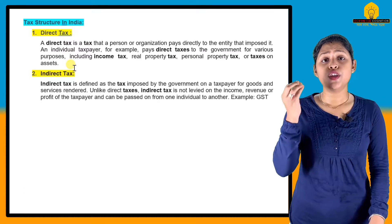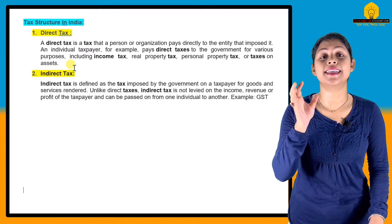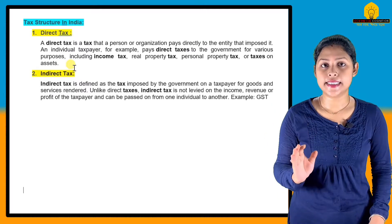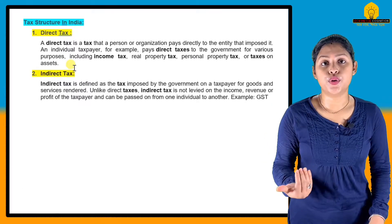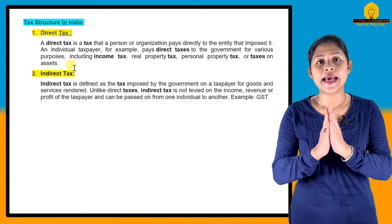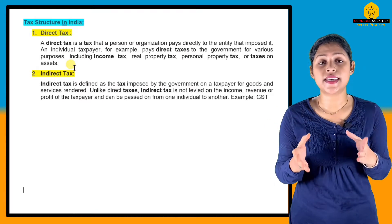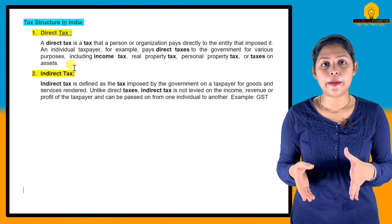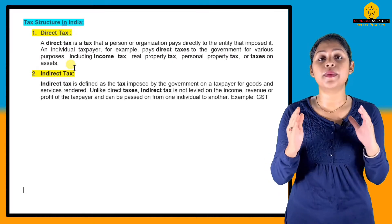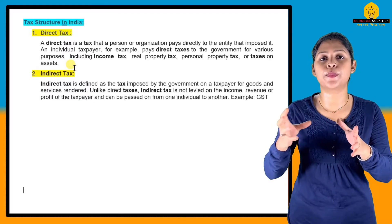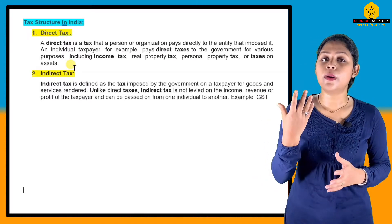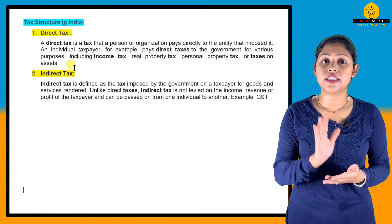In direct tax, the government sets a tax slab. As per government rules, if you have income that falls within a certain percentage bracket set by the government, you pay that percentage directly to the government.